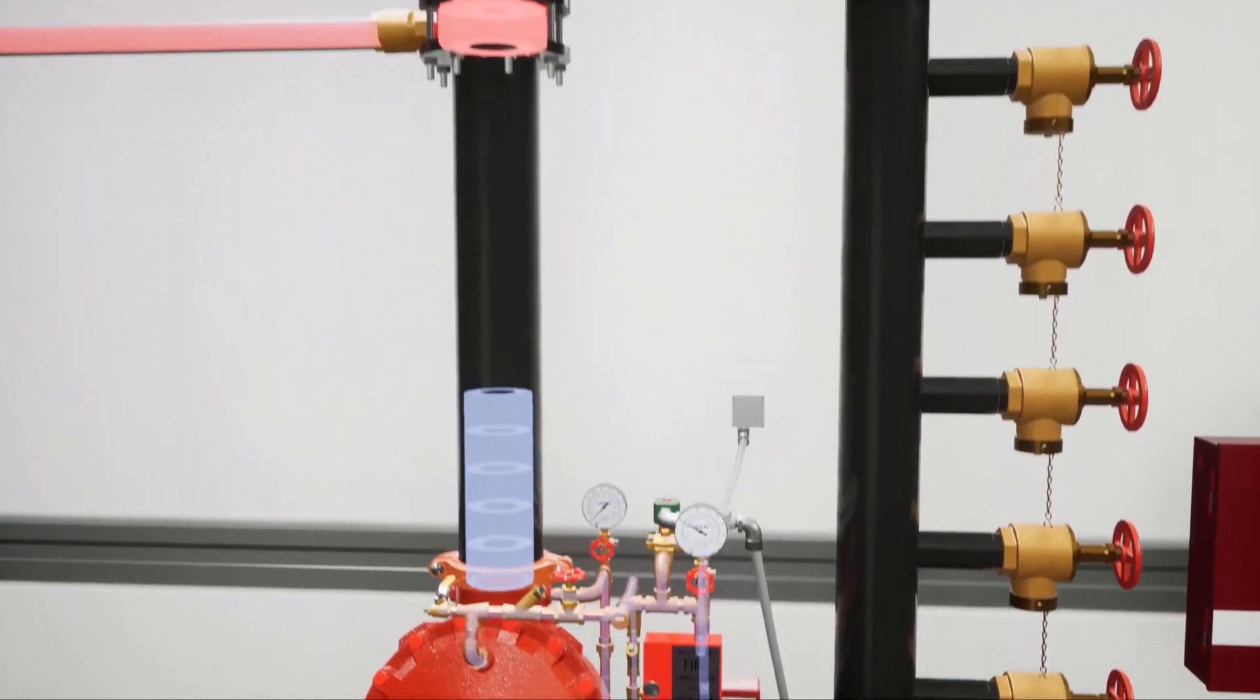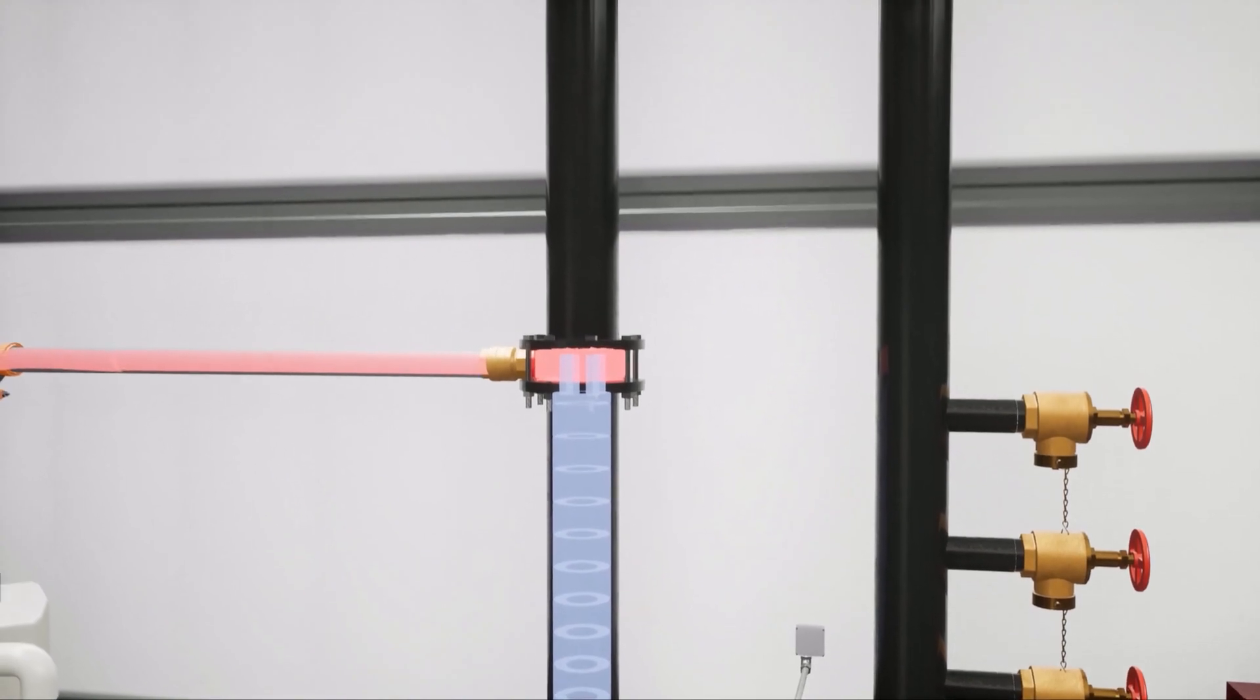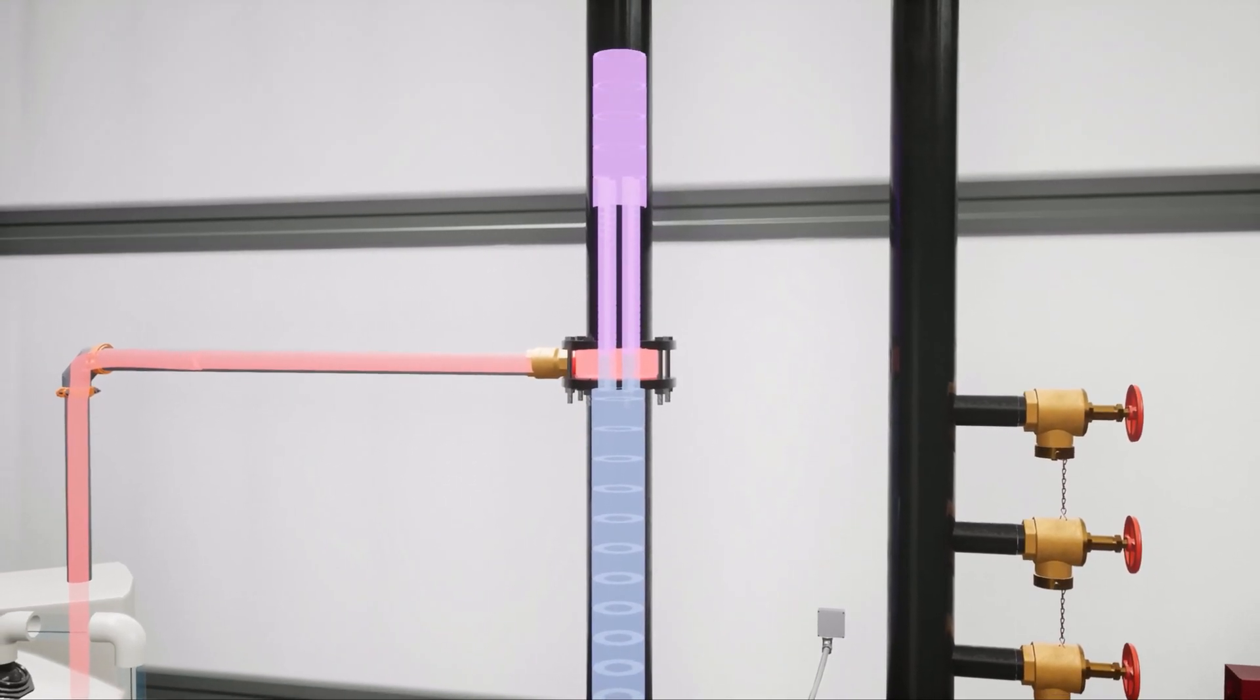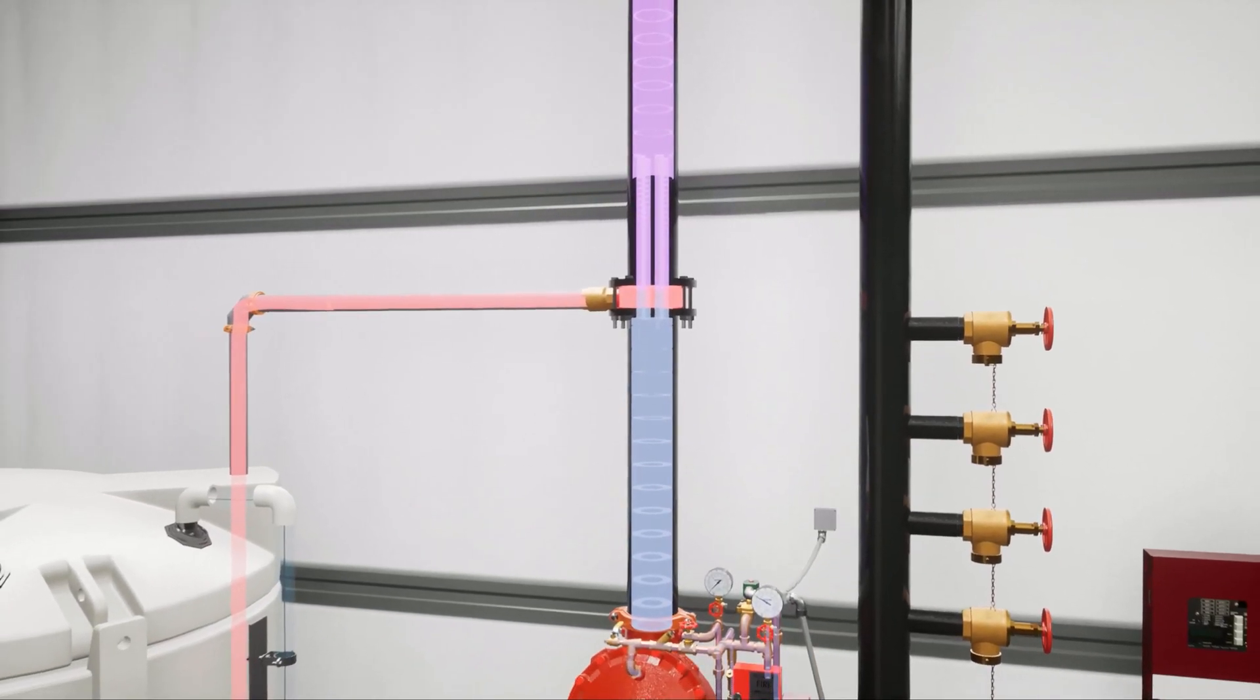Water flows through the riser to the inductor. Water passing through the inductor creates a vacuum at the foam inlet side of the inductor, which pulls foam concentrate into the water stream.